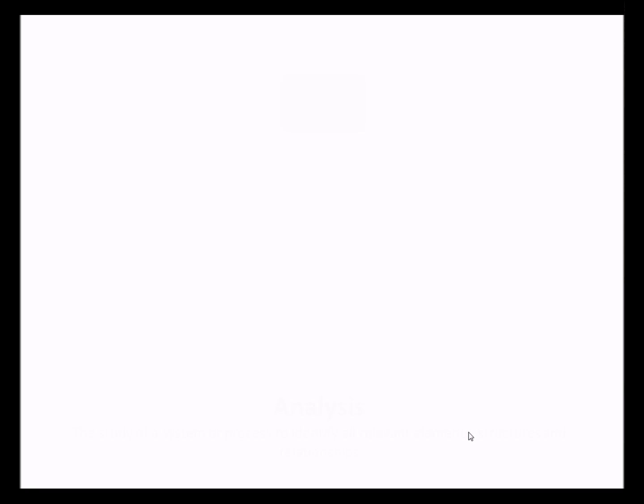Let us start by first of all understanding the first part of the system lifecycle: the analysis stage. The analysis is about looking at the system that currently exists — not the one you're going to build, but the current situation or problem. If you're presented with a problem to solve, it is at the analysis stage that you look at that problem itself. It involves a multitude of activities and can be undertaken by someone called an analyst, whose job is to undertake the analysis, from which a solution can then be implemented.